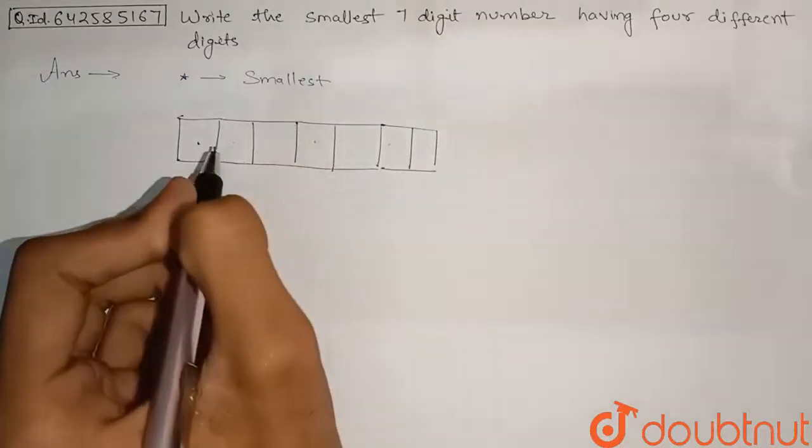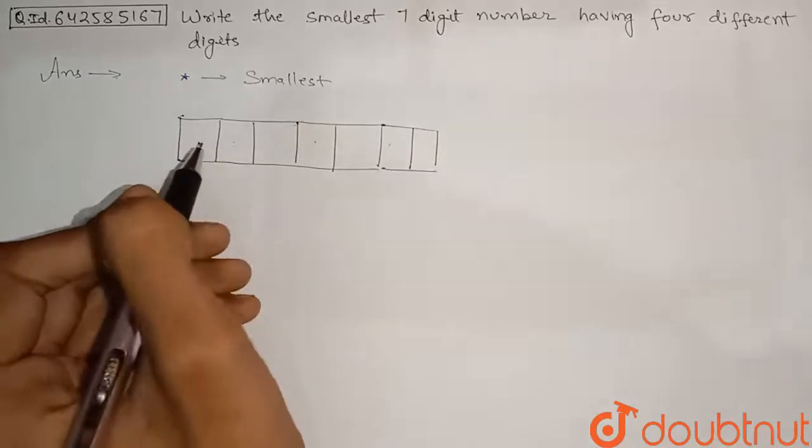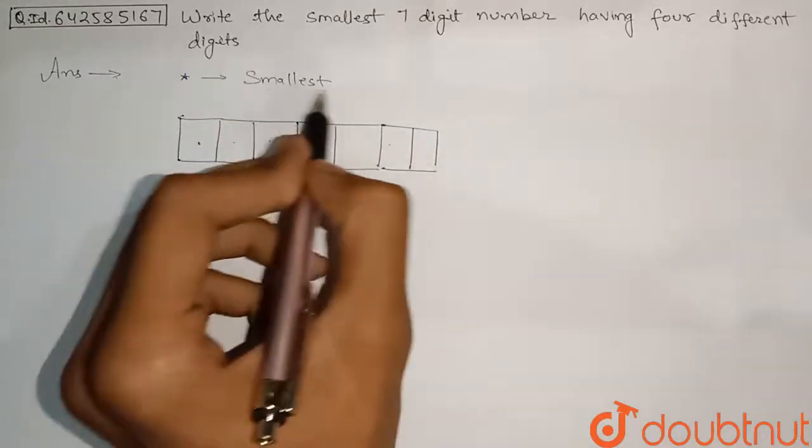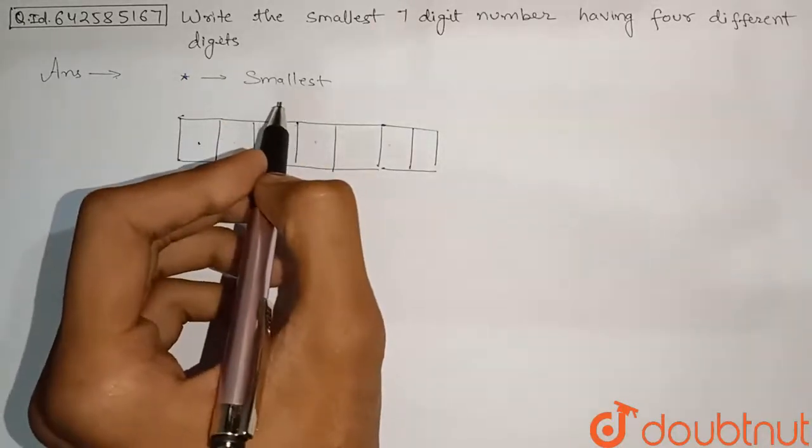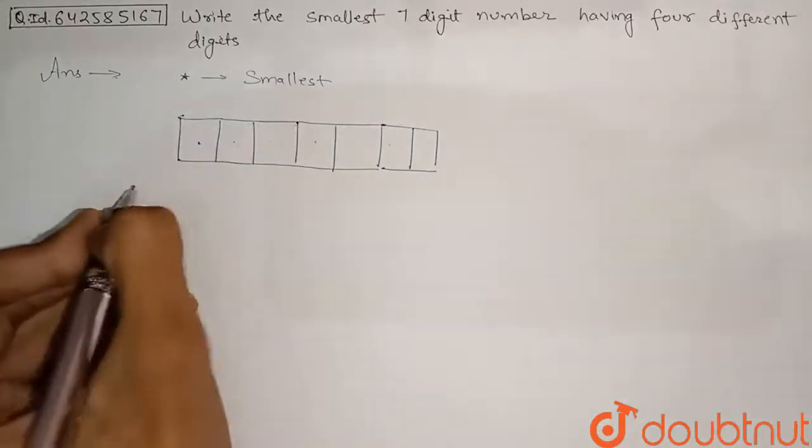So we have to just form a 7 digit number. Now we have to just form a smallest number. So we can choose the most smallest digits.